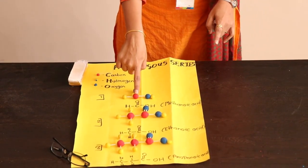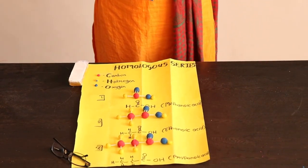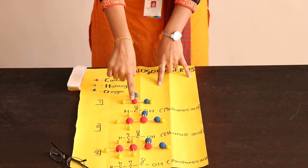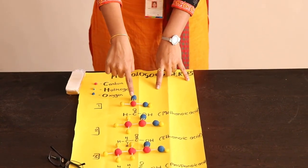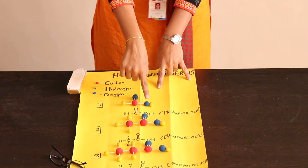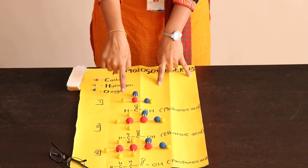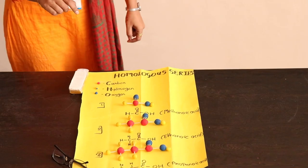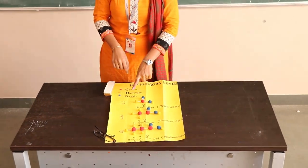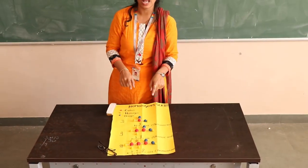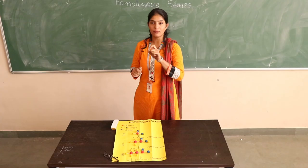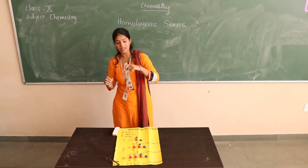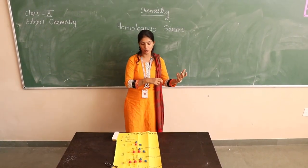Now suppose we want to study methanoic acid. Here you can observe this one carbon atom — it is attached with two oxygen atoms and two hydrogen atoms. This is the one carbon atom where we can study the formation of methanoic acid, where the acid functional group has only one single carbon atom attached to the COOH group.